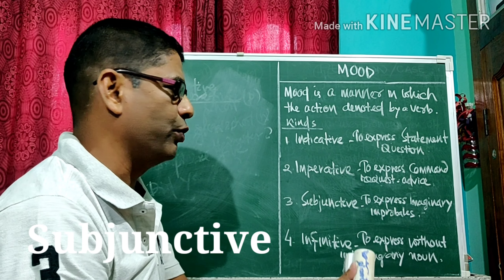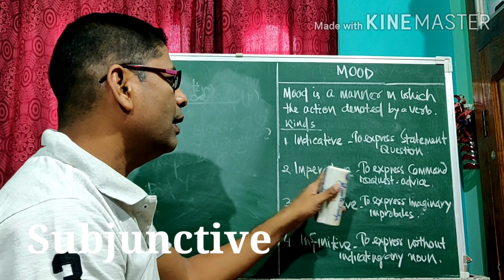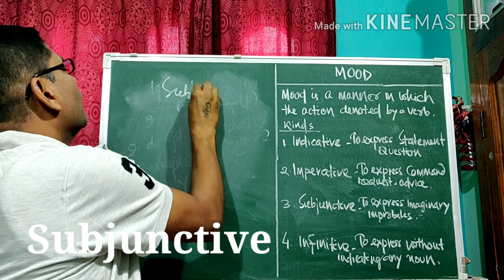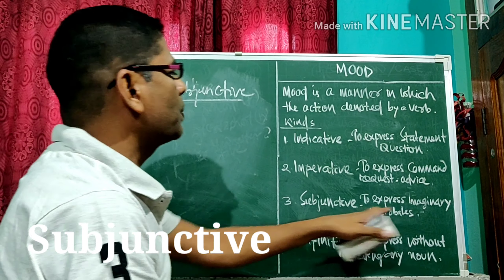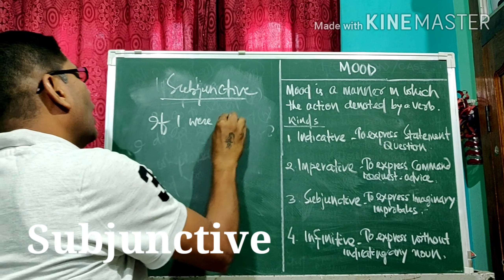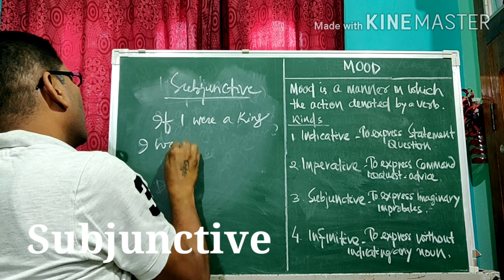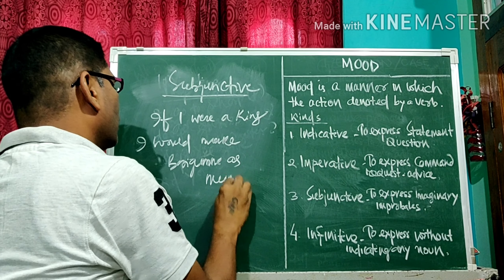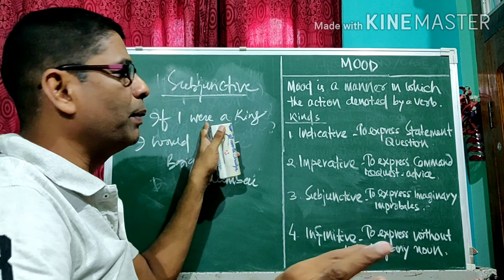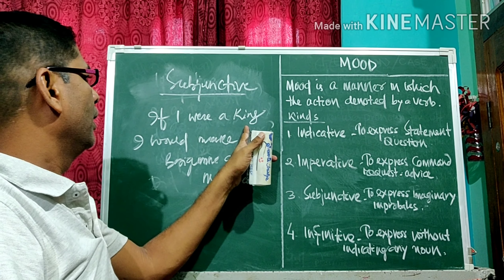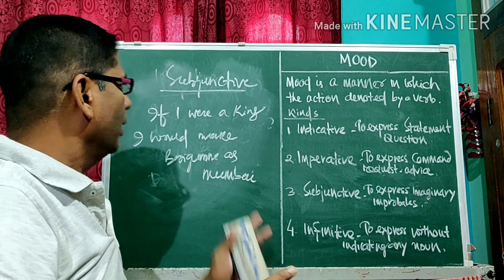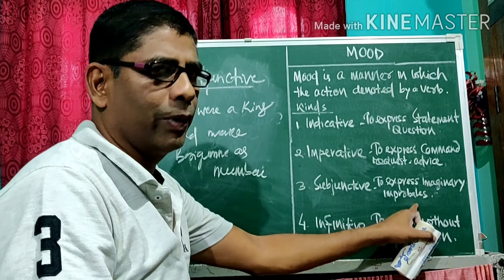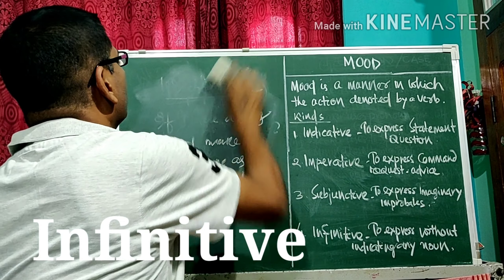Number three: subjunctive mood. Subjunctive is used to express imaginary or improbable things — things which cannot be possible in the future. For example, 'If I were a king, I would make Burima as Mumbai.' Right now I am not a king, so this is totally imaginary or totally improbable. That is the subjunctive mood.